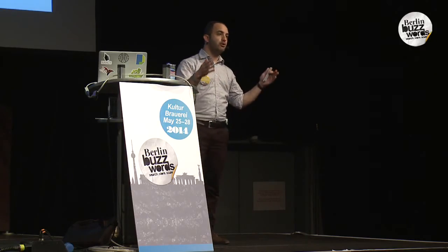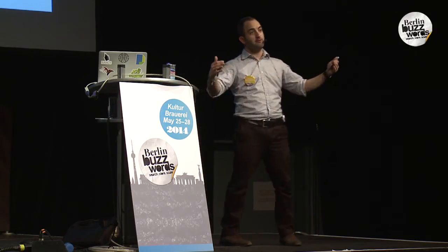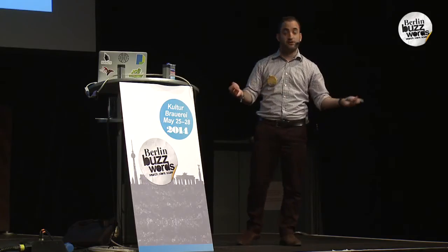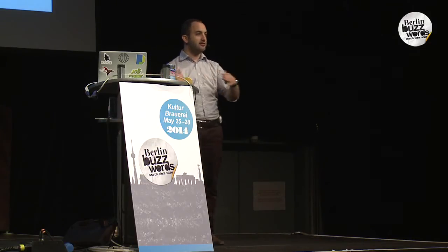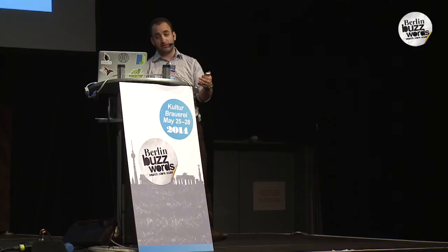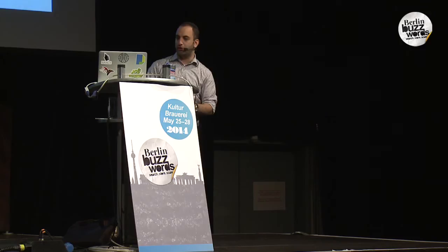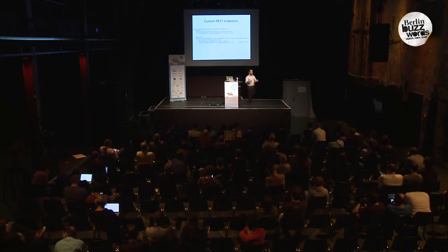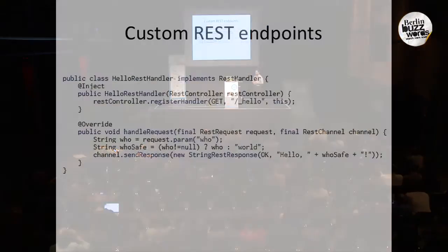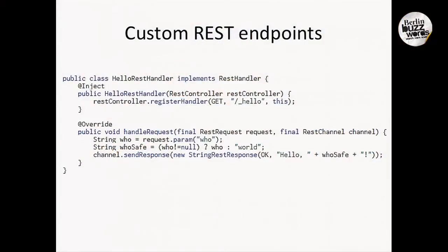Side note: always put Elasticsearch behind a proxy - that way you protect yourself from a lot of things. But I say that to make sure that advice doesn't translate into exposing your website out of Elasticsearch - just use it for internal business logic you want distributed. The code shown here is very simplistic: once you have a request coming in, you parse it, process it, do whatever logic you have, then build the response and send it back.